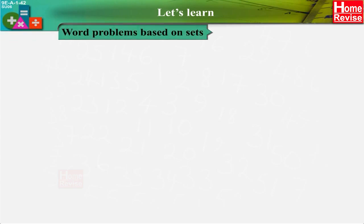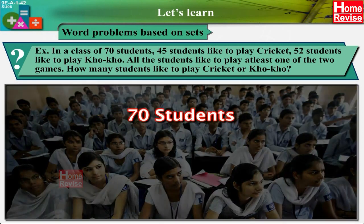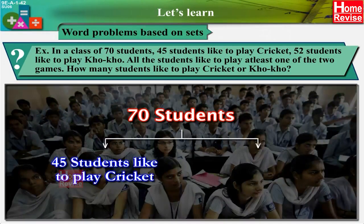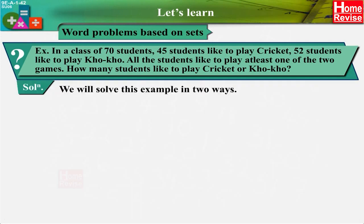Let's learn problems based on sets. Example: In a class of 70 students, 45 students like to play cricket and 52 students like to play Kho-kho. All the students like to play at least one of the two games. How many students like to play cricket or Kho-kho? We will solve this example in two ways.